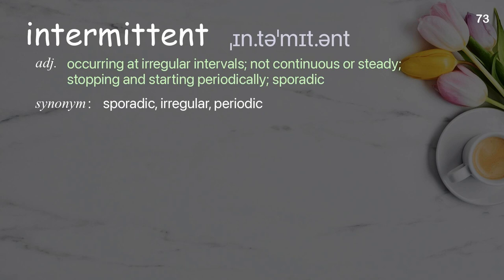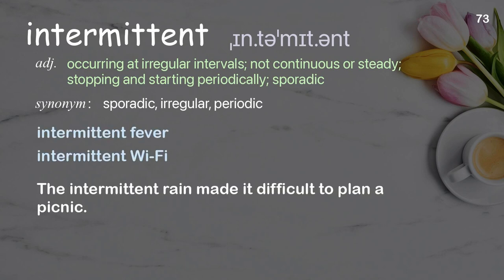Intermittent: occurring at irregular intervals; not continuous or steady; stopping and starting periodically; sporadic. Examples: intermittent fever, intermittent Wi-Fi. The intermittent rain made it difficult to plan a picnic.